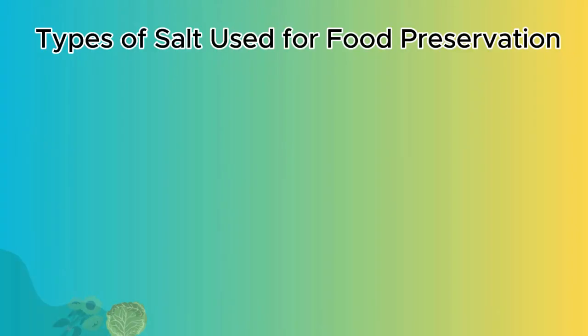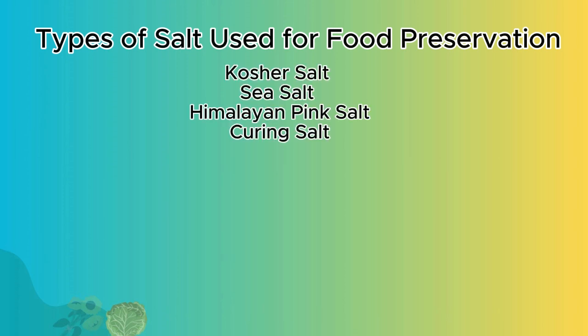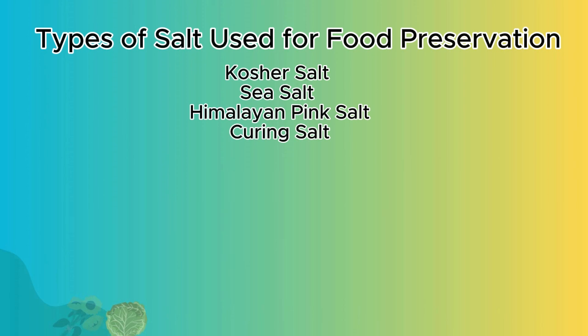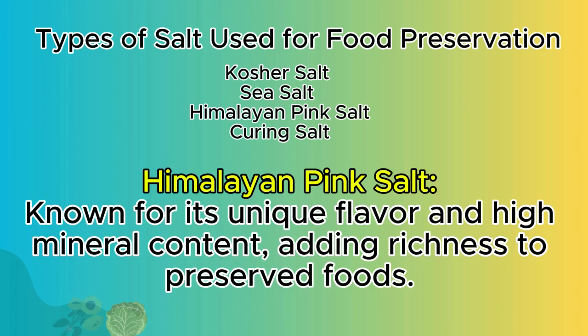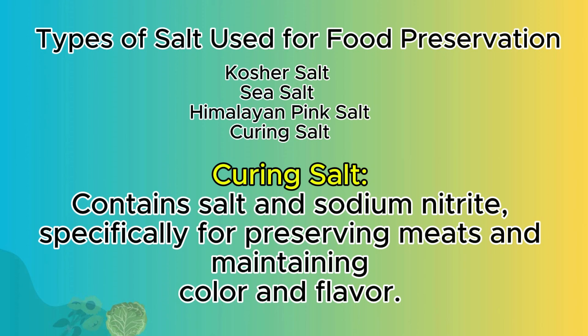Types of salt used for food preservation include kosher salt, sea salt, Himalayan pink salt, and curing salt. Kosher salt is favored by chefs for its purity and versatility in preserving and seasoning protein. Sea salt is less processed, retaining natural minerals and flavors, suitable for various preservation techniques. Himalayan pink salt is known for its unique flavor and high mineral content, adding richness to preserved foods. Curing salt contains salt and sodium nitrite, specifically for preserving meats and maintaining color and flavor.